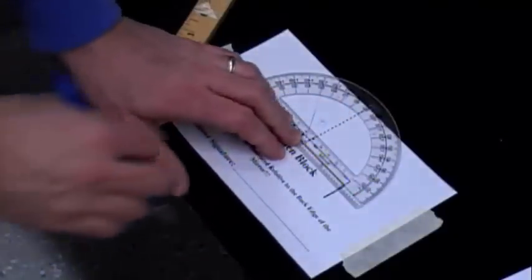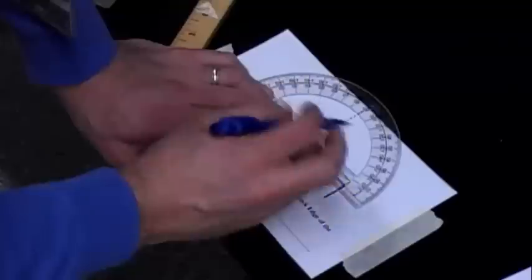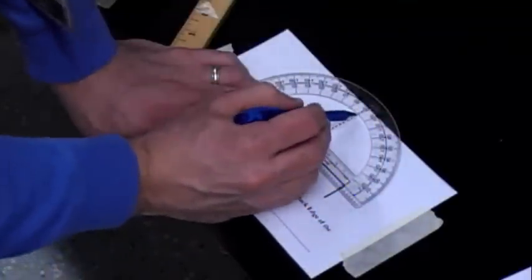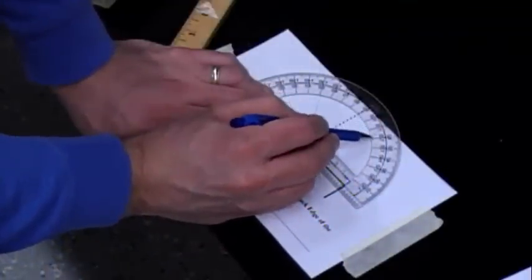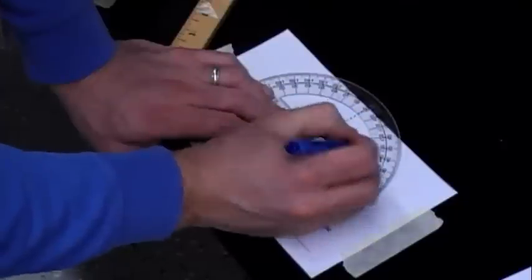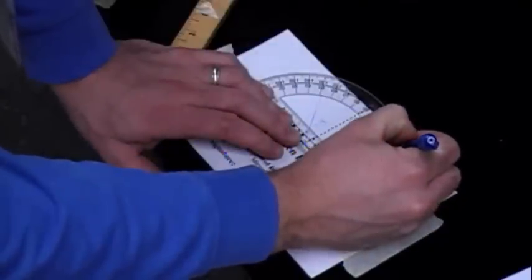Now we know that the law of reflection tells us that the angle of reflection must be equal to the angle of incidence. So that means that I need to create an incoming ray that also makes an angle of 39 degrees relative to the normal.